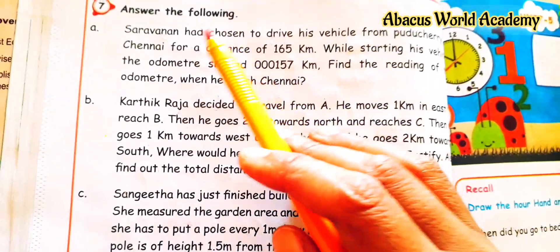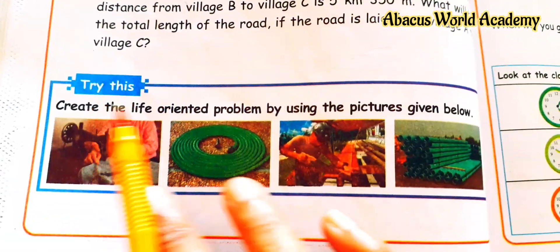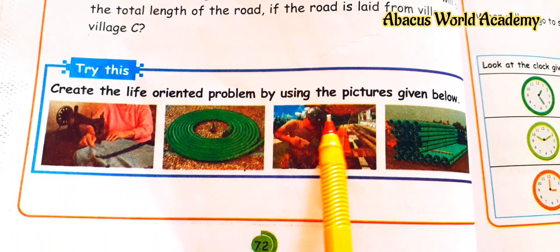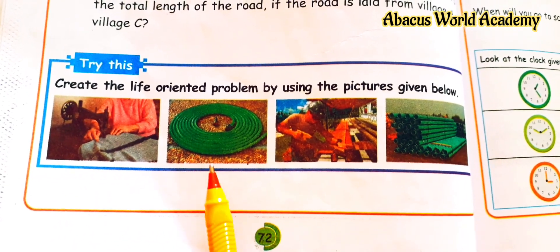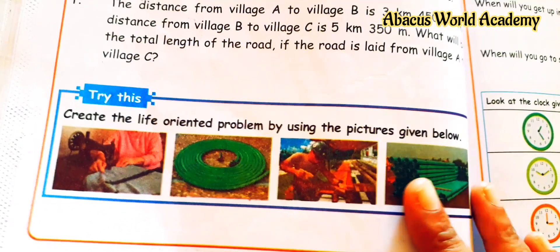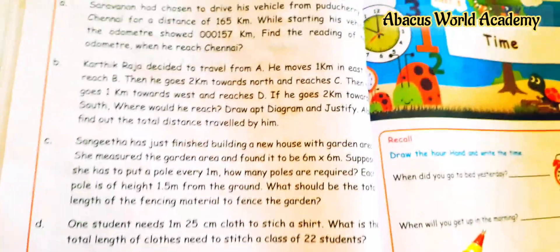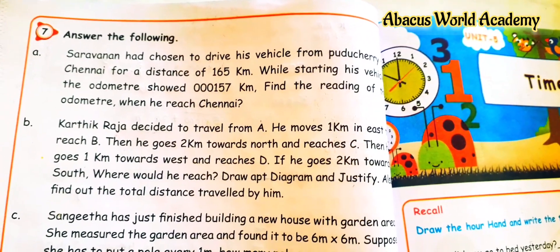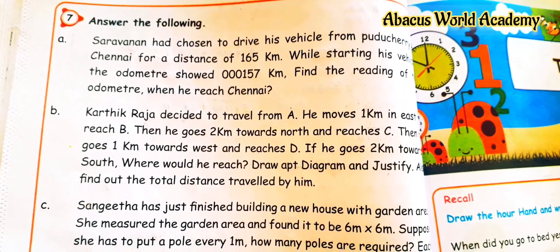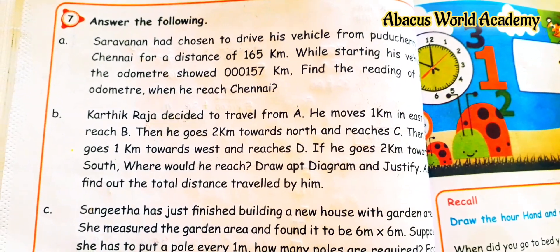Students, step problems A, B, C, D and E. Try this: create a life-oriented problem by using the pictures given below. Now we will do all these step problems. If you have any doubt, comment, like, and subscribe to our channel. Thank you for watching this video. Thank you so much, bye.